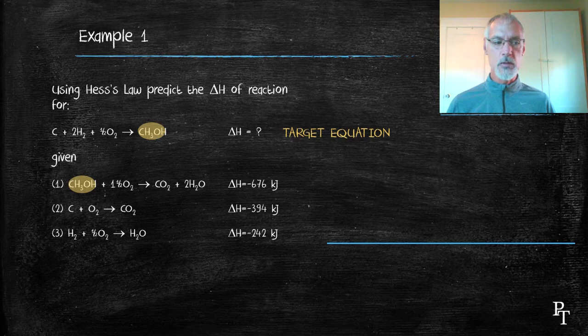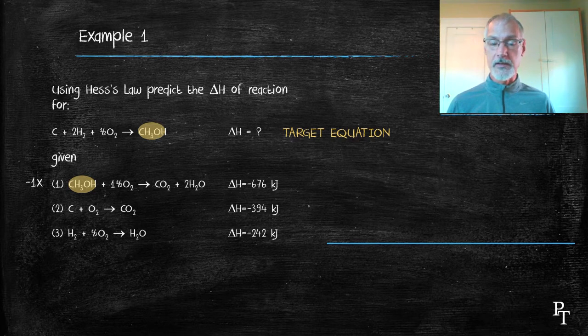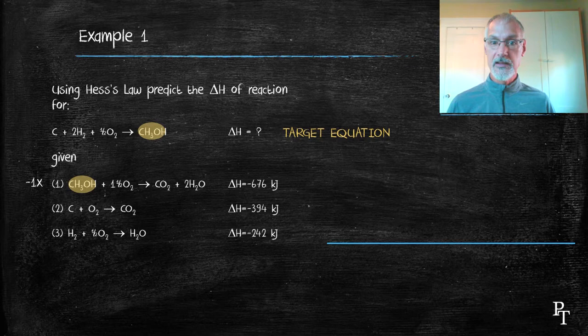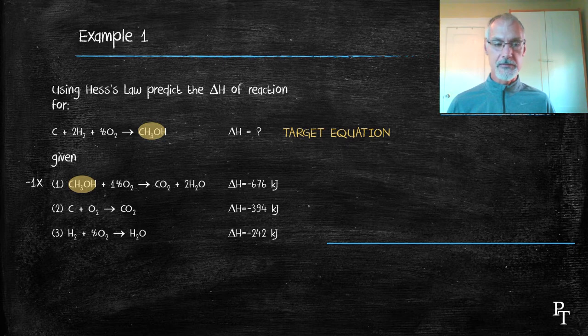So essentially what I would like to do is switch that or reverse that. To do that, I'm going to multiply equation number one by minus one. That'll flip my products and reactants. The other thing it does is change the enthalpy from exothermic to endothermic. And that indeed does make sense if I go in the other direction, instead of a reaction being exothermic, it now becomes endothermic.